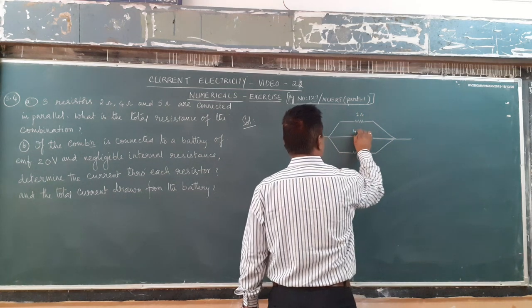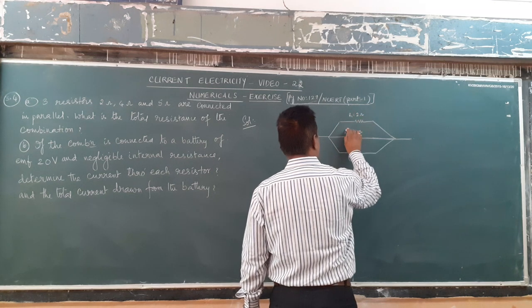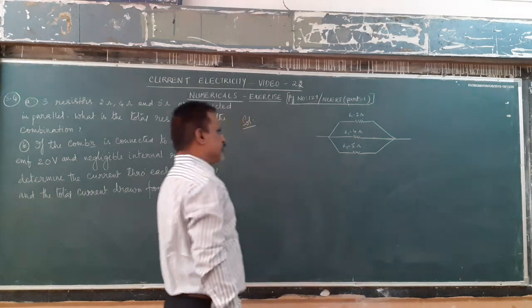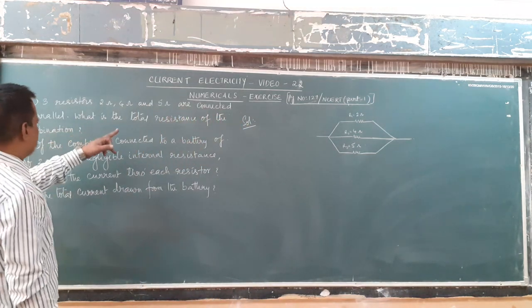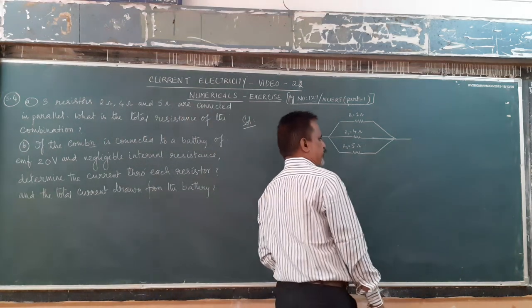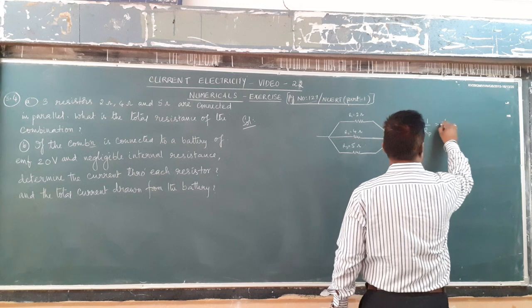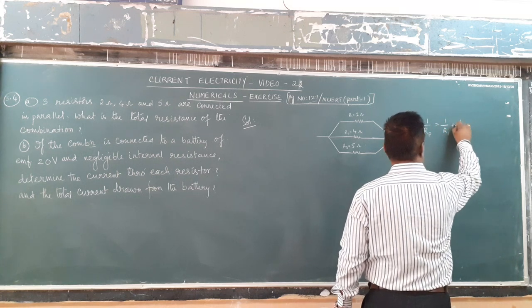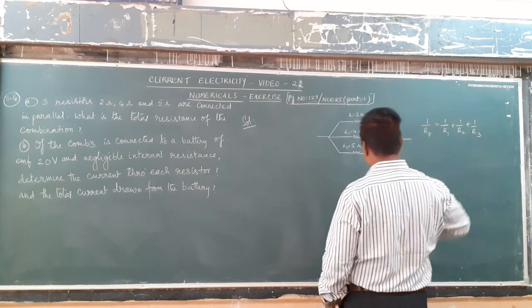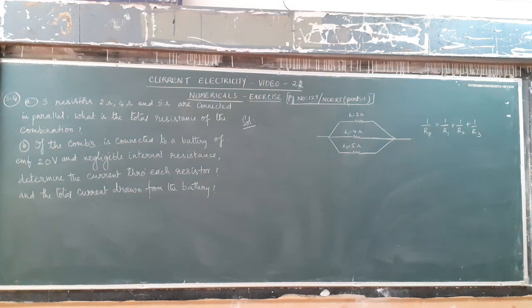2 ohm, 4 ohm, and 5 ohm — let us take them as R1, R2, and R3. They are asking us to find the total resistance of the combination. We know that the formula for total resistance in parallel combination is: 1/R = 1/R1 + 1/R2 + 1/R3.